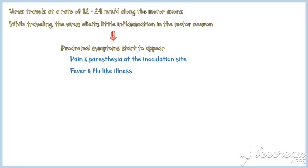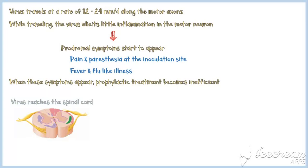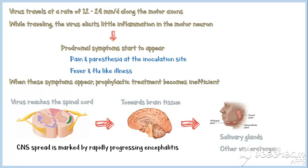These symptoms will be discussed in more detail in the following sections. Unfortunately, when these symptoms appear, prophylactic treatment almost always becomes inefficient, and rabies is expected to follow its fatal course. The virus then reaches the spinal cord and travels towards brain tissue. CNS spread is marked by rapidly progressing encephalitis. Thereafter, the virus travels to salivary glands and other visceral organs.